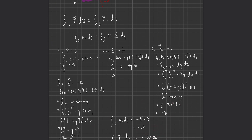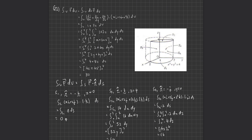Now I'll go through Question 2. Question 2 is to verify the Gauss Divergence Theorem for the given shape. F is equal to x·i + 2·j + z²·k. The Gauss Divergence Theorem states that the triple integral over V of the divergence of F dV equals the double integral of F dot n dS.